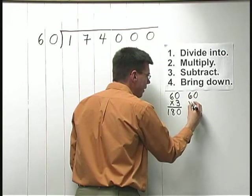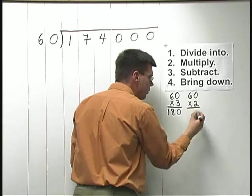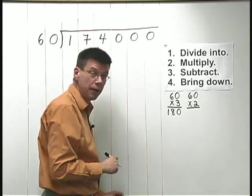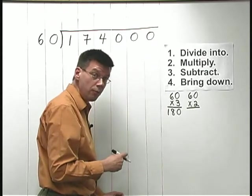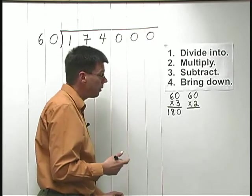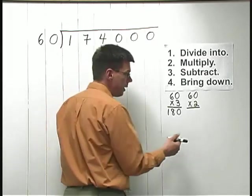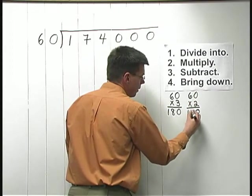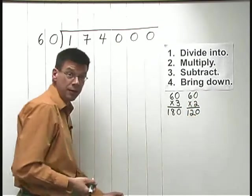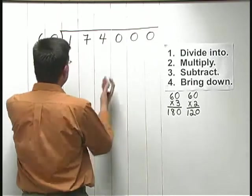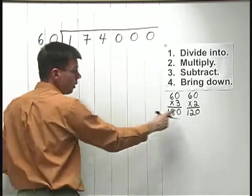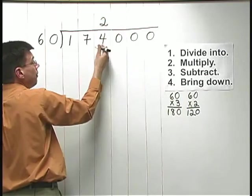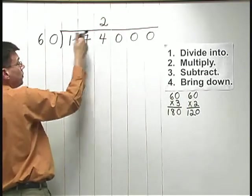60 times 2, again, you bet you can do this in your head. 6 times 2 is 12, so 60 times 2 will be 120. It's kind of like a 12 with a 0 on the end. Or if you work it out, you get that same answer, 120.